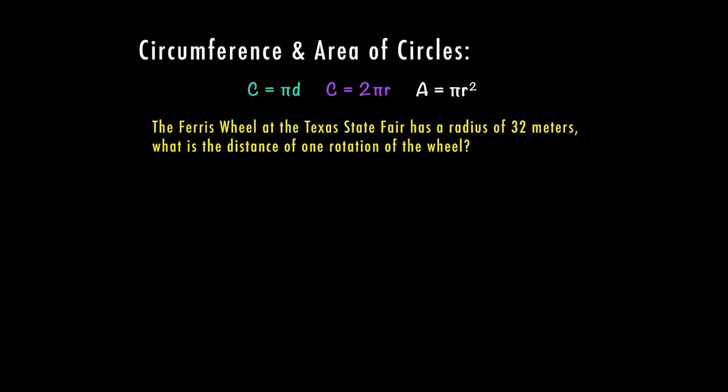Now let's talk about a different situation where we have a Ferris wheel at a state fair that has a radius of 32 meters. What is the distance of one rotation of the wheel? So in this case, we don't actually have our picture anymore of our circle. So let's just draw a circle. And I know that the radius is only halfway across the circle. So they said this part of the circle is 32 meters. I need to find the rotation, so that would be around the outside. So this one I'm solving for the circumference.